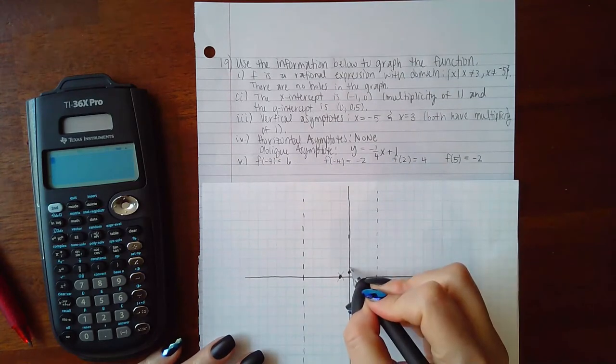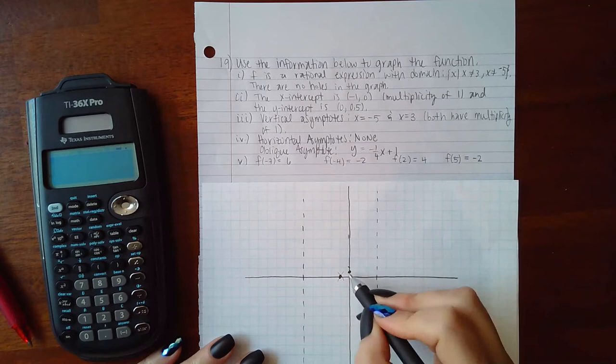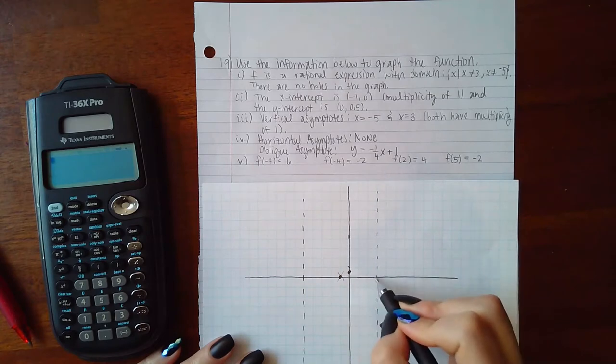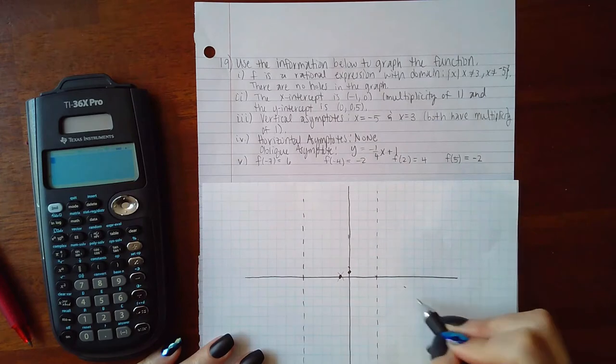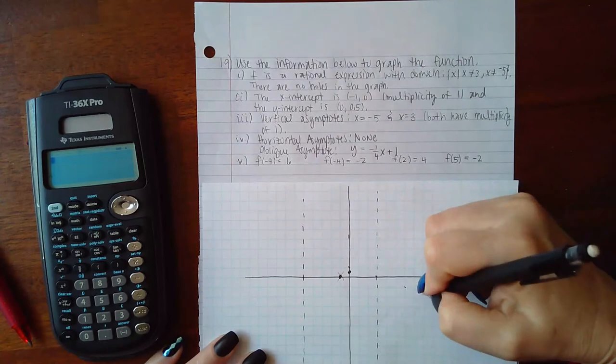I have 1, and then if I go down 1 and over 4, down 1 and over 4, down 1 and over 4. So you start to see...